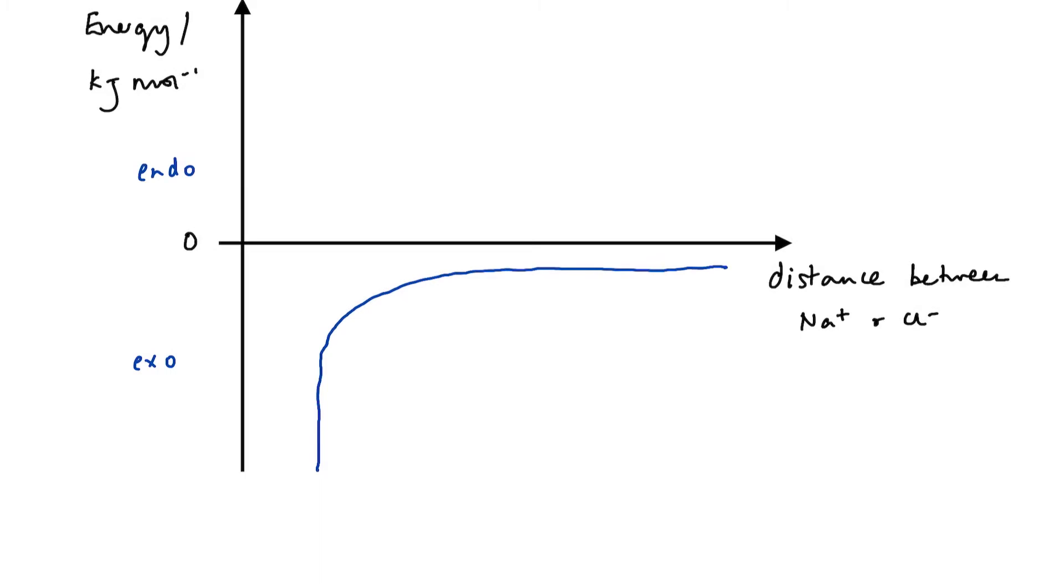However, we also know that the ions are not going to get closer and closer together until they collapse on each other. That's not what our model predicts and that's not what our electron density maps are showing us. There must be some force of repulsion between the ions and this repulsion is the result of the electrons of oppositely charged ions repelling each other. So this would be seen as an endothermic term. The closer our ions are to each other we get to a point where the electrons of the individual ions start to repel even though they're oppositely charged. So we've got two opposing forces here.